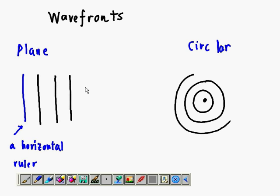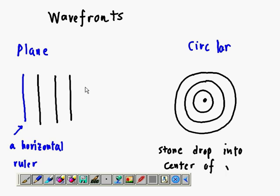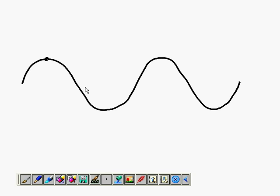A circular wave front is like dropping a stone into the middle of a pond. The ripples created look like circles, a succession of circles. We also have a way to define them.